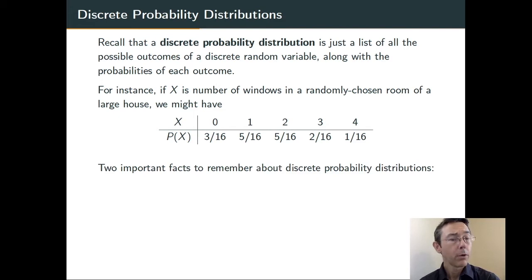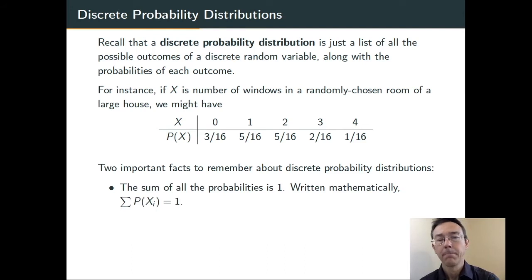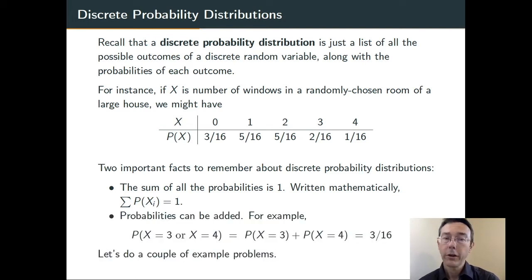Two important properties of discrete random variables and discrete probability distributions. First of all, all the probabilities have to sum up to 1. Basically, something has to happen. So if you look at this example above and you add up all of those probabilities, you get 16/16 or 1.